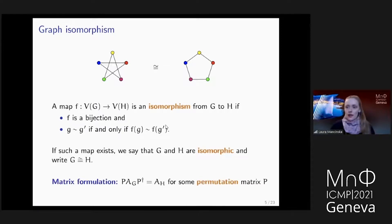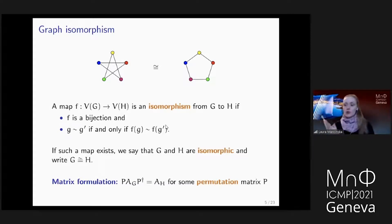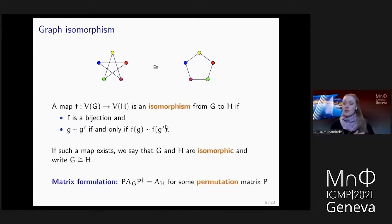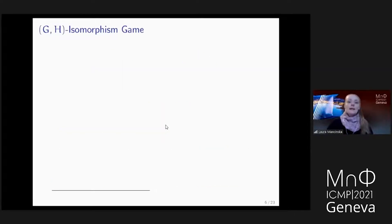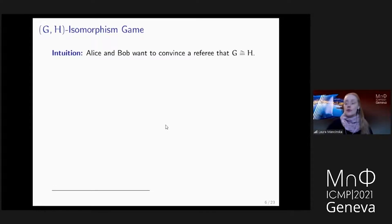There is another very common way to define graph isomorphism in terms of adjacency matrices. These are zero-one matrices where you place a one in positions corresponding to adjacent vertices. In this matrix formulation, we require the existence of a permutation matrix that conjugates the adjacency matrix of one graph to that of the other. To define the quantum analog, I need yet another way to think about graph isomorphism — provided by an interactive protocol where two provers, Alice and Bob, try to convince a referee that two graphs are the same. The game starts when the referee selects two vertices: one is sent to Alice, one to Bob, and they respond with vertices from the other graph.